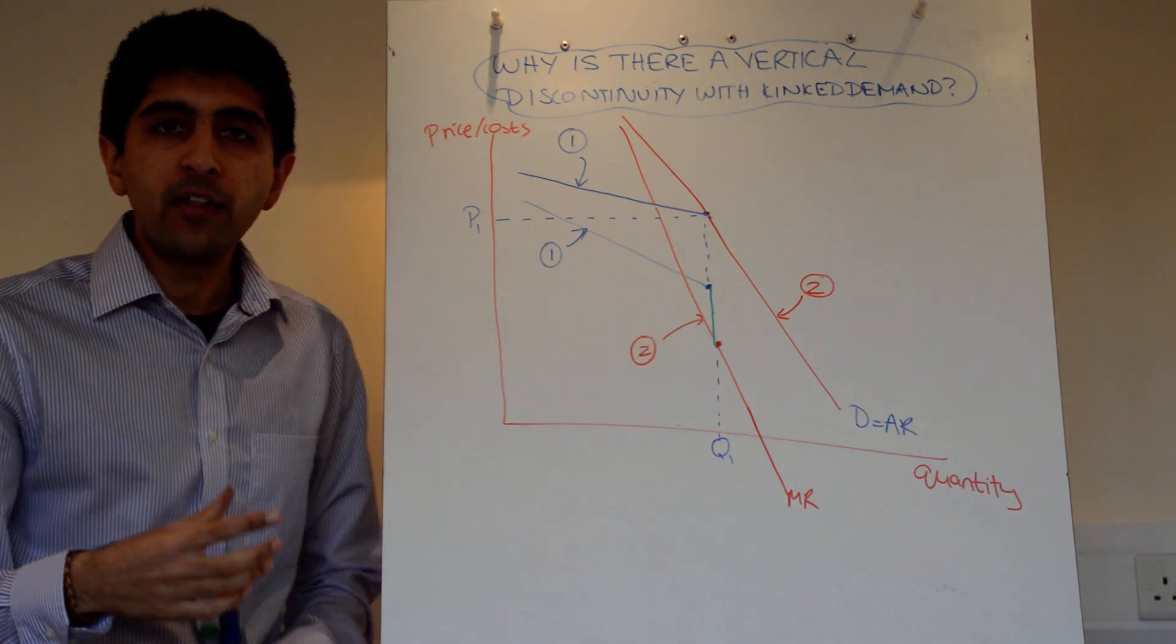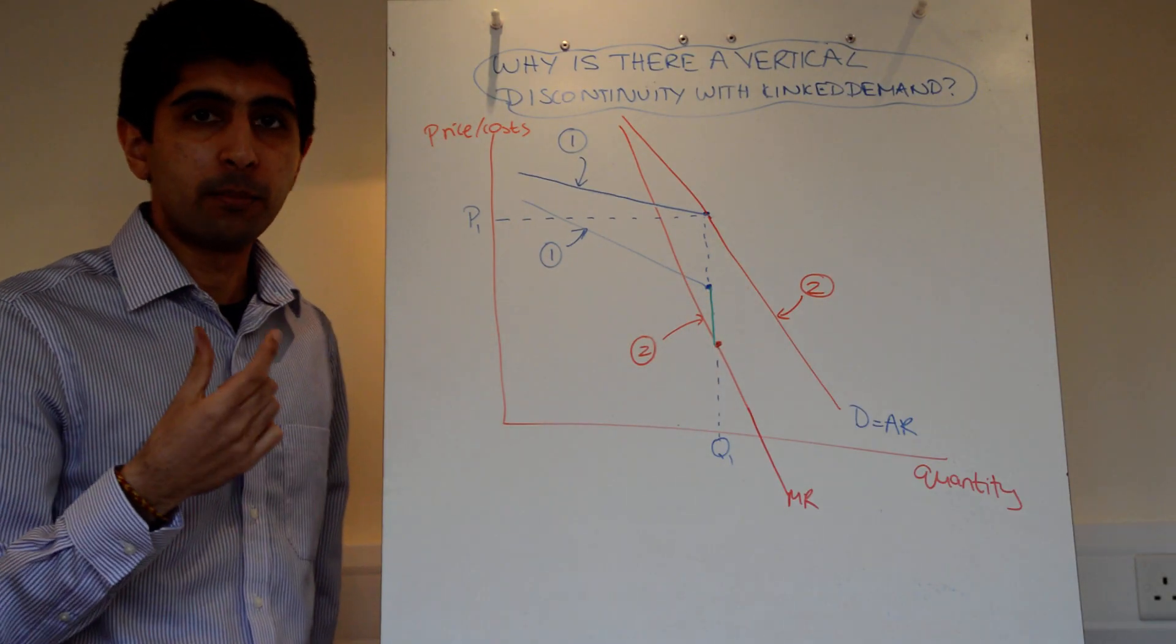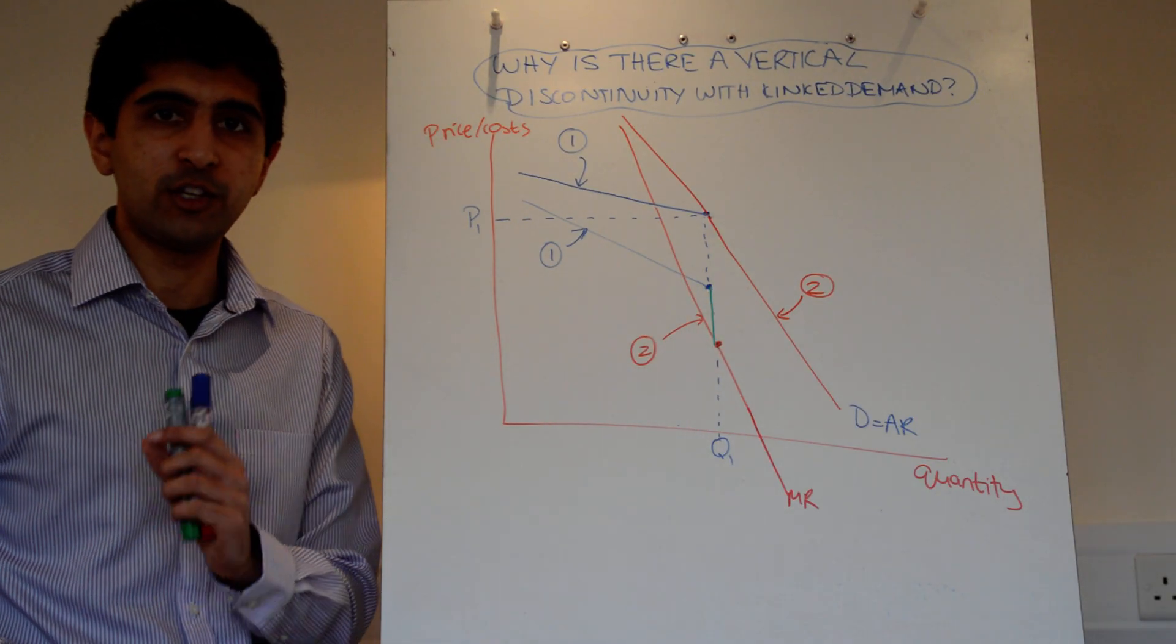So I've drawn the green line. There is no place where the red marginal revenue curve connects with the blue marginal revenue curve. There is a discontinuity there.